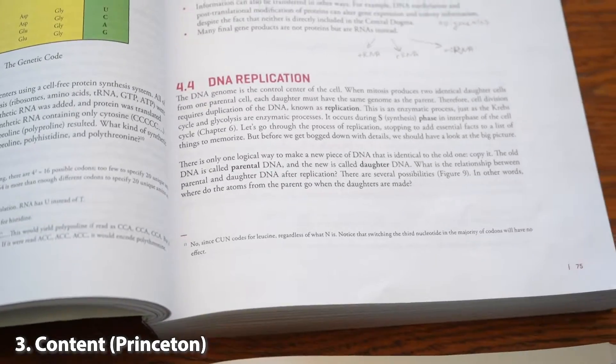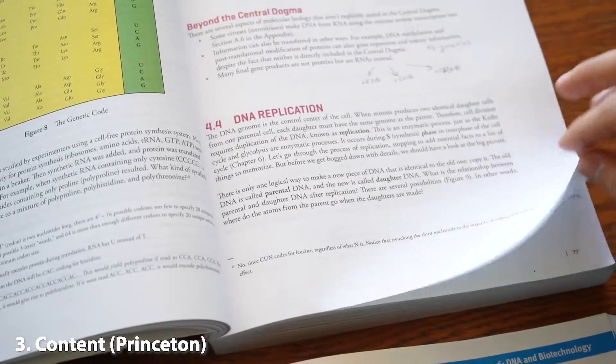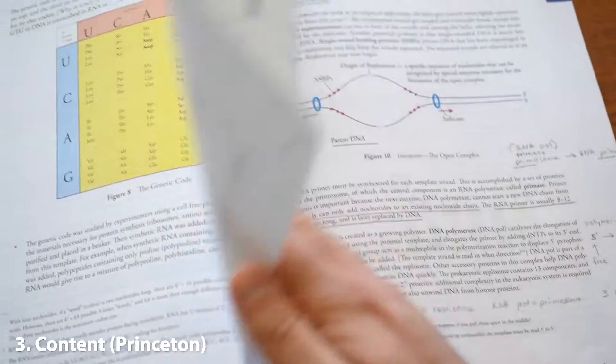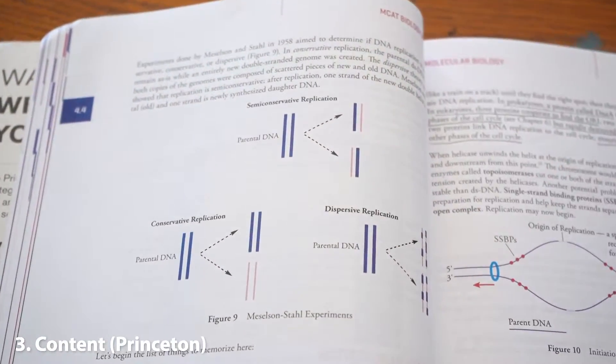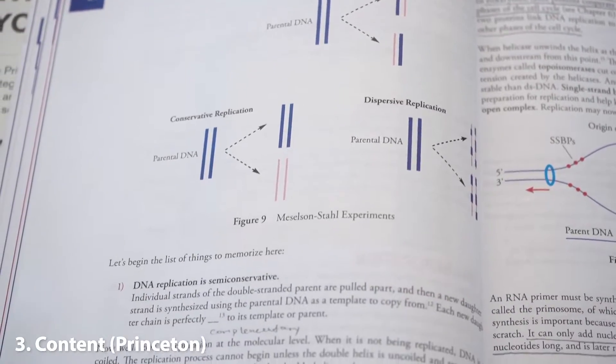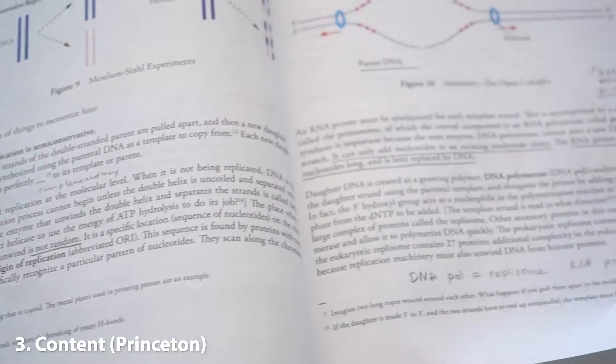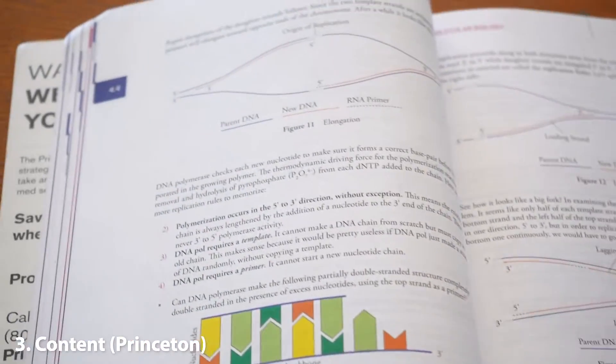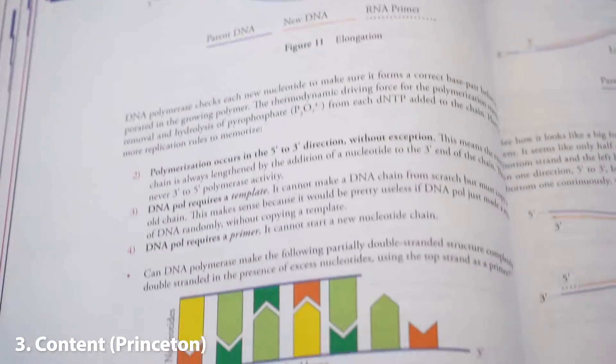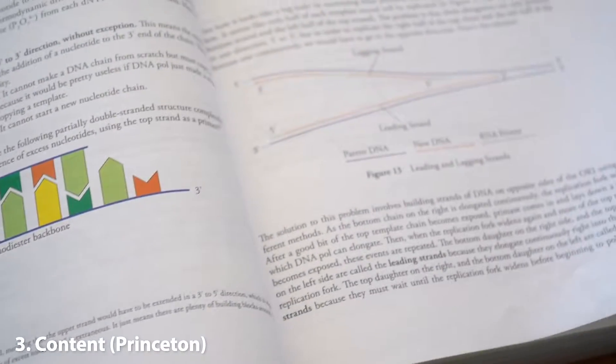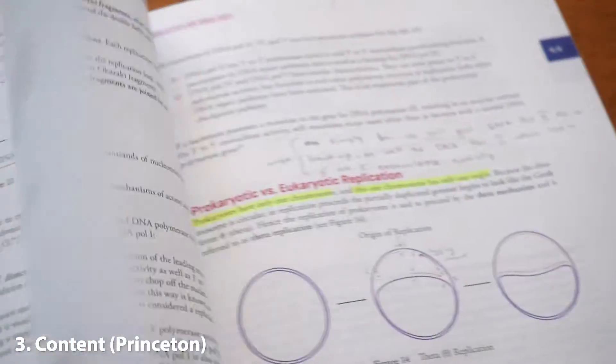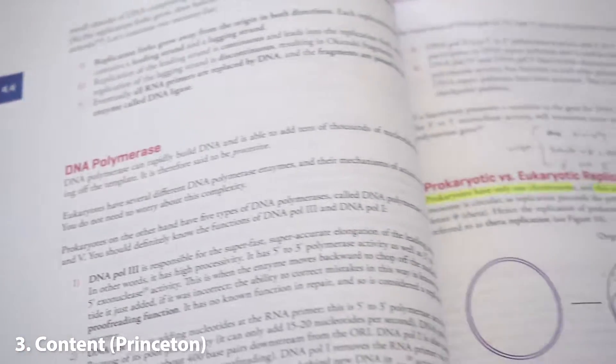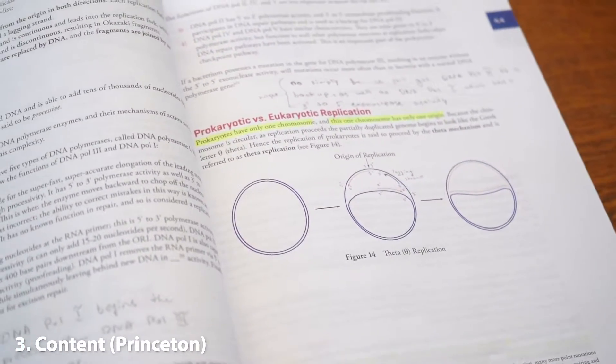So as we go through DNA replication in the Princeton biology review book, we can see that they cover everything in very great detail. They show us diagrams. They also give us more diagrams. And lastly, they talk about DNA polymerase and prokaryotic versus eukaryotic replication.